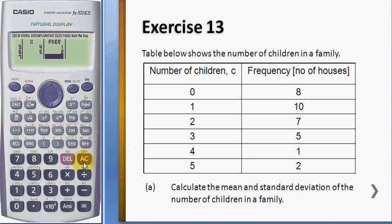After you key in all the data, what you need to do is press AC and then press shift one to call the stat function, and number five variable, and number two is the x-bar. So the mean is 1.606.